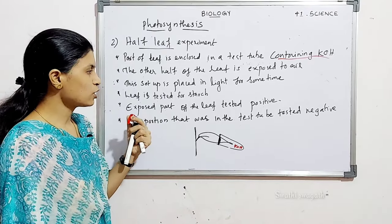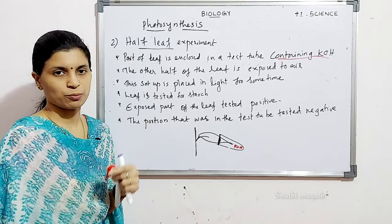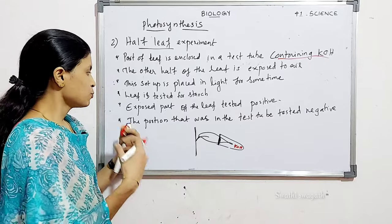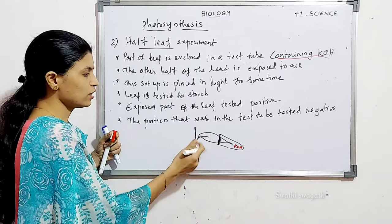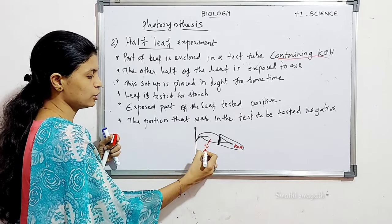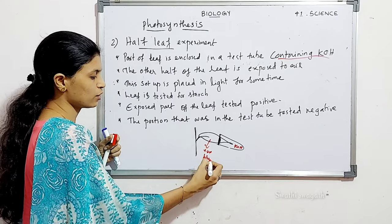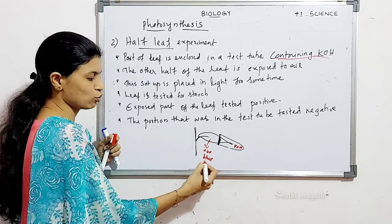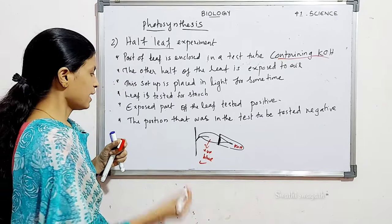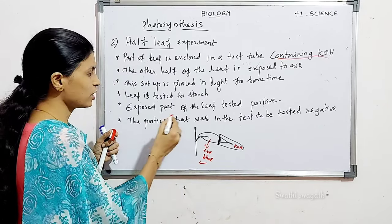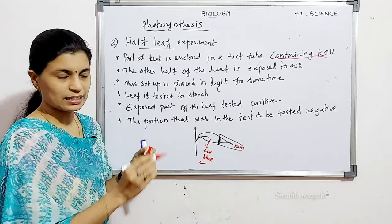The result: the exposed part of the leaf tested positive — that is, it showed blue color, indicating photosynthesis occurred. And the portion that was inside the test tube tested negative — photosynthesis did not occur there.